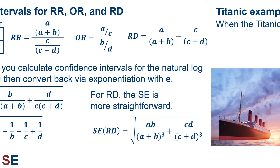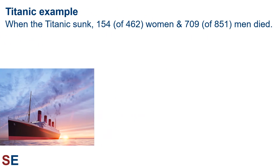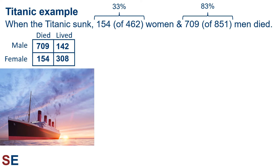Now let's look at two examples of real-world data. This first data set is used in tons of examples of the relative risk and odds ratio. It's an analysis of the difference in the chances of dying that men and women on the Titanic faced when it sunk in 1912. When the Titanic sunk, 154 of 462 women and 709 of 851 men died — that's 33% of the women and 83% of the men. The risk factor is male versus female, with male being the riskier of the two, and the outcomes are whether the individuals died or lived. The relative risk gives a value of 2.499, indicating that the chance of dying for a male on the Titanic was about two and a half times as high as for a female.